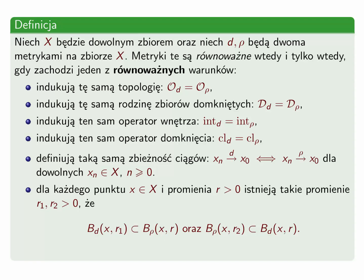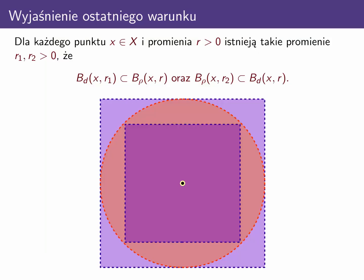Kula względem metryki ρ o promieniu r2 zawiera się w kuli względem metryki d o promieniu r. Wszystkie kule, o których mowa, są o środku w punkcie x. Chciałbym się zatrzymać na ostatnim warunku, aby go lepiej wyjaśnić. Wykorzystam do tego metrykę euklidesową oraz metrykę maksimum, które są równoważne.